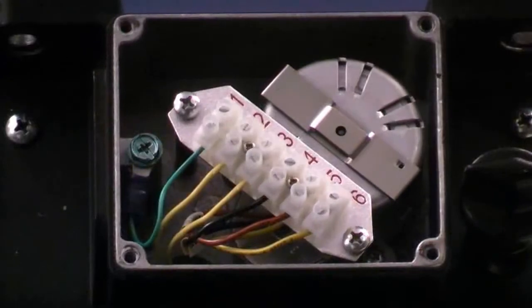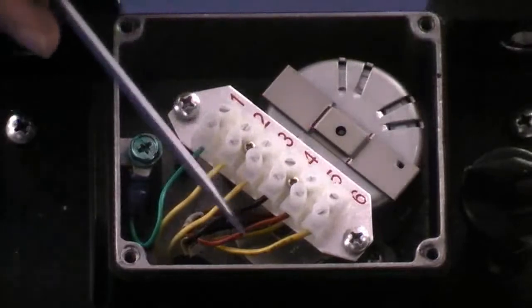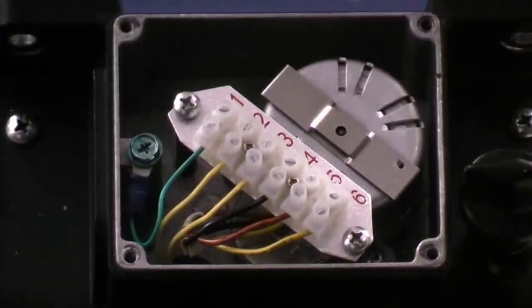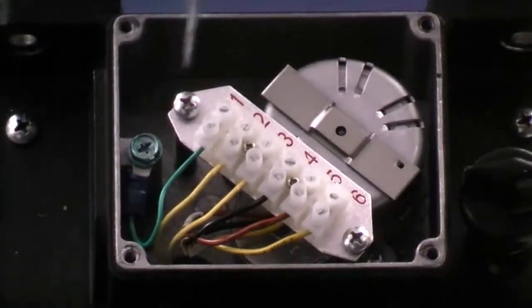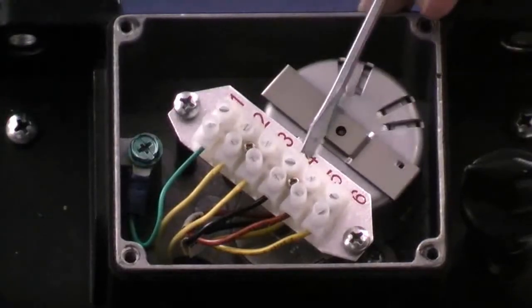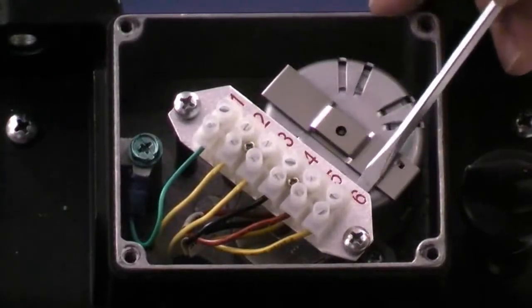Inside the motor gearbox compartment, we have a terminal strip which has already been pre-wired to the motor gearbox. To wire up to this unit, number one is your ground. Two and three are used for the low-level switch. Number four is the 230 volt. Number five is 115 volt. And your number six is your neutral.